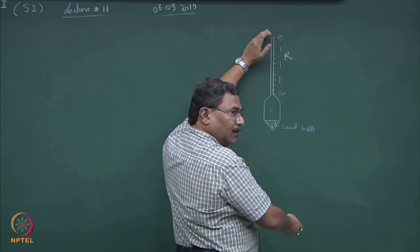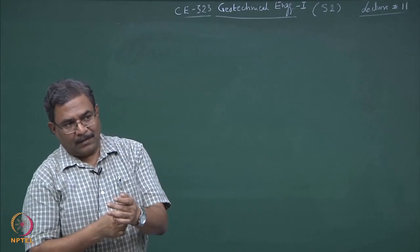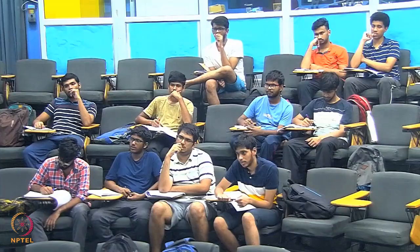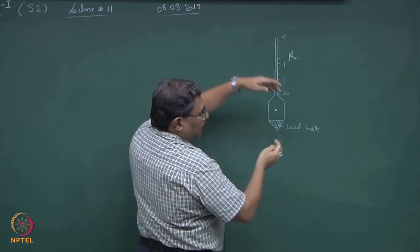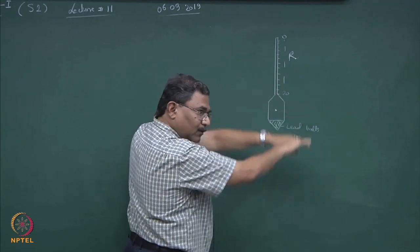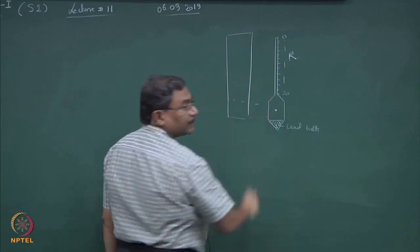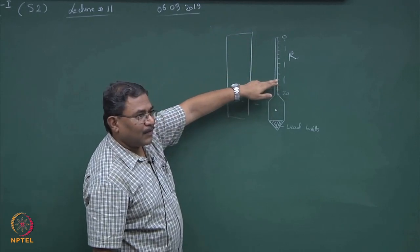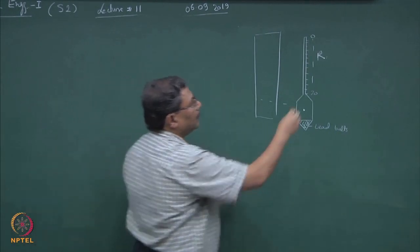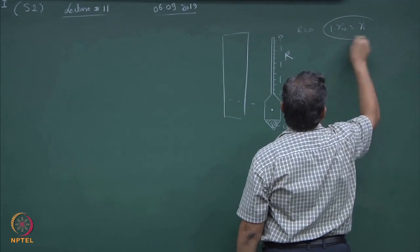As the suspension process goes on in the hydrometer column, what will happen to R — will it increase or decrease? Look at this density distribution. When you started with the initial density gamma_i and then left the cylinder for settlement, all the particles are settling down. So the top portion of the liquid column is becoming lighter. If this becomes lighter, what happens to R? It goes up. So R equal to 0 will indicate 1 into gamma_w is the gamma_i — the unit weight of water.